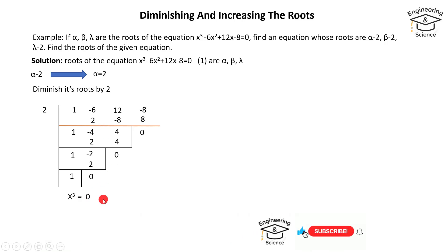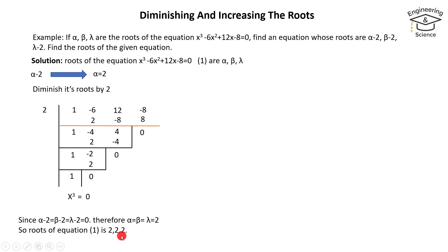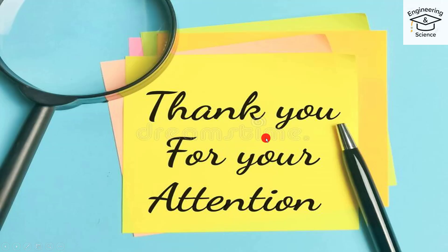Since alpha minus 2 equals beta minus 2 equals lambda minus 2 equals 0, therefore alpha equals beta equals lambda equals 2. So the roots of the original equation are 2, 2, and 2. The transformed equation is x cubed equals 0, and its roots are 0, 0, 0. That's all — have a nice time.